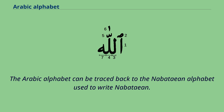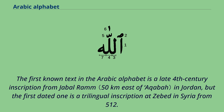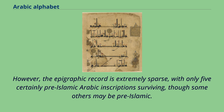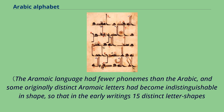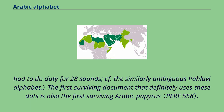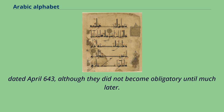The Arabic alphabet can be traced back to the Nabatean alphabet used to write Nabatean. The first known text in the Arabic alphabet is a late 4th-century inscription from Jabal Ram in Jordan, but the first dated one is a trilingual inscription at Zebed in Syria from 512. The epigraphic record is extremely sparse, with only five certainly pre-Islamic Arabic inscriptions surviving. Later, dots were added above and below the letters to differentiate them. The Aramaic language had fewer phonemes than Arabic, and some originally distinct Aramaic letters had become indistinguishable in shape, so that in early writings 15 distinct letter shapes had to serve for 28 sounds. The first surviving document that definitely uses these dots is also the first surviving Arabic papyrus, dated April 643.